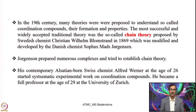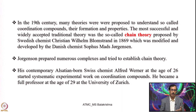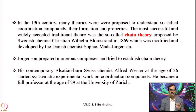In fact, Blomstrand and Jorgensen were contemporaries of Alfred Werner, who proposed coordination theory after studying it very systematically. It is very interesting to know about the rivalry between Jorgensen and Alfred Werner. Jorgensen prepared numerous complexes and tried to establish his chain theory to explain the formation, properties and reactivity of coordination compounds. His contemporary, Alsatian-born Swiss chemist Alfred Werner, at the age of 26, started systematic experimental work on coordination compounds.